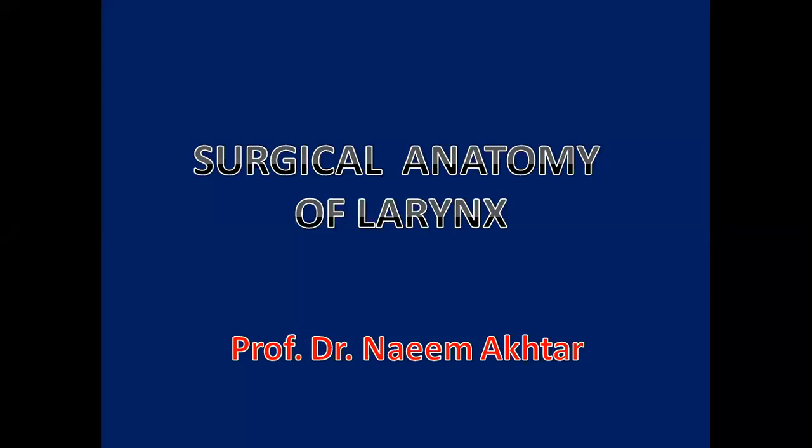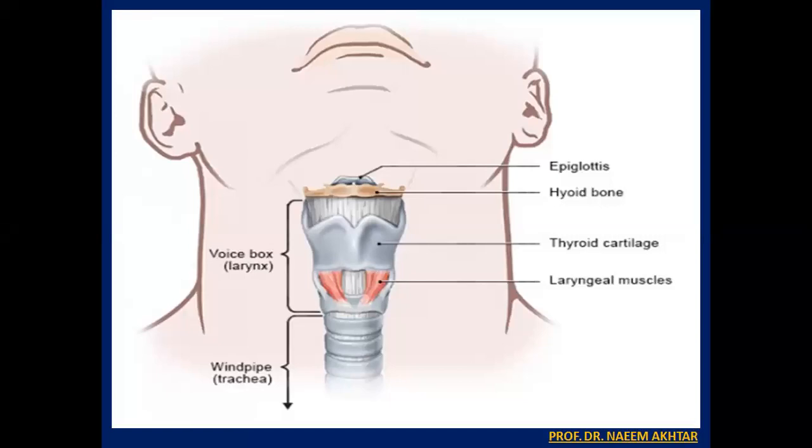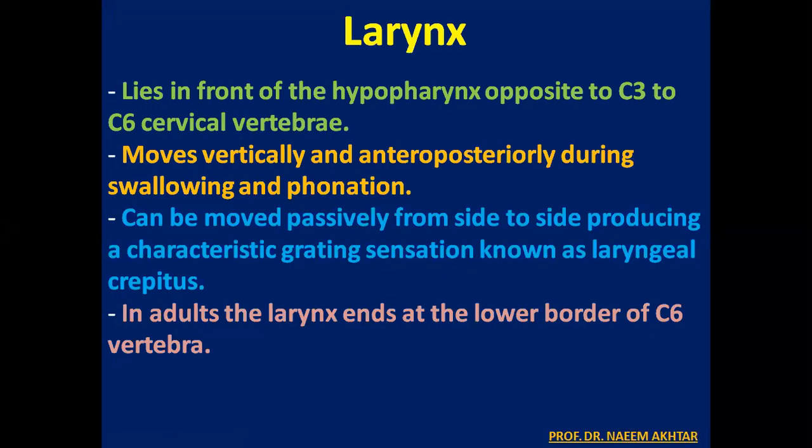Welcome to lectures on laryngeal diseases. Today we will discuss the surgical anatomy of the larynx. The larynx, the sound box of human beings, lies in front of the hypopharynx, opposite to C3, C4, C5 and C6 cervical vertebrae. It moves vertically and anteroposteriorly during swallowing and phonation.